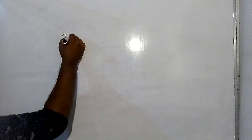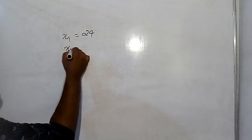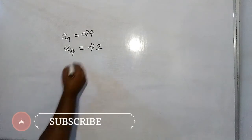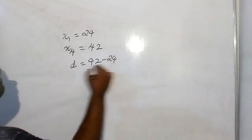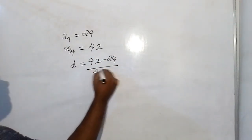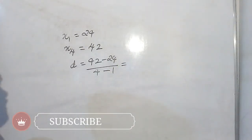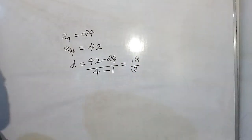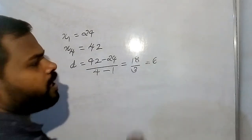Let's work this out. x1 equals 24, x4 equals 42. So 42 minus 24 is 18, divided by 3, giving us a common difference of 6.